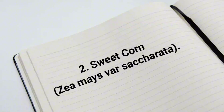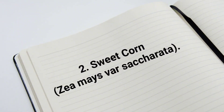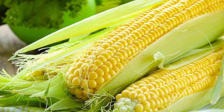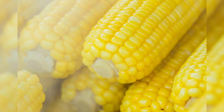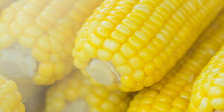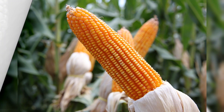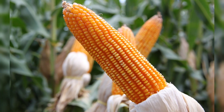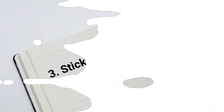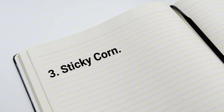2. Sweet corn (C. mays var. saccharata). This variety has a sweet taste and has a smooth structure when consumed, and is harvested in conditions that are not completely ripe.